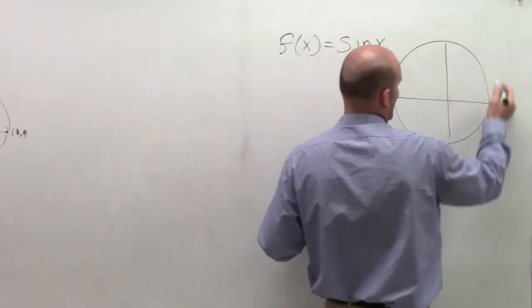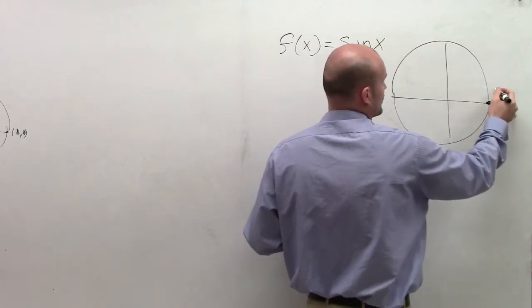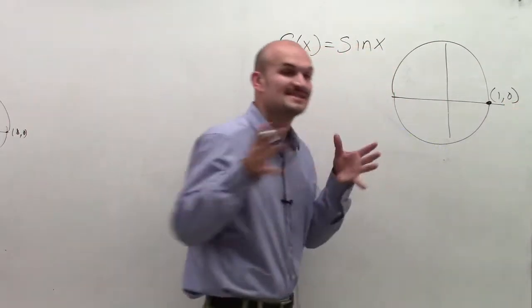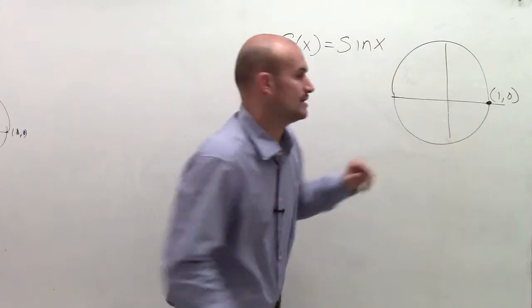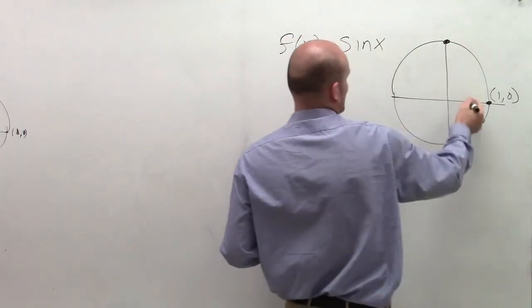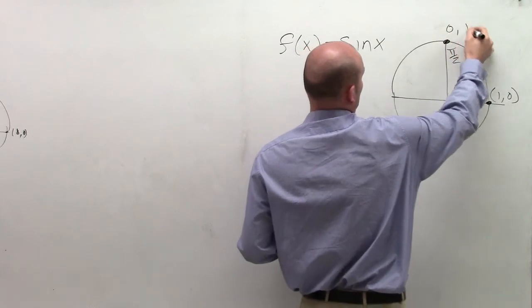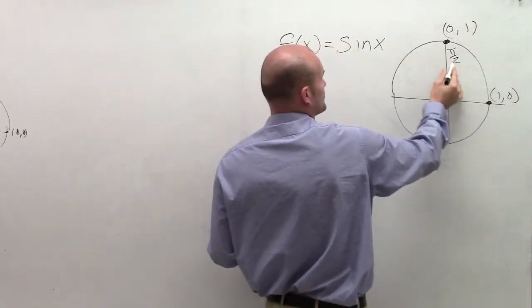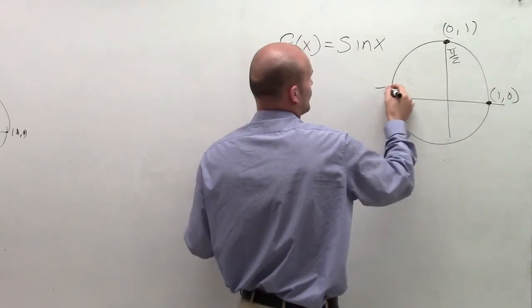So if I had an angle, my angle is 0. The coordinate point there is 1 comma 0. Remember, the sine function of that angle represented the y-coordinate. So for this angle, which is pi over 2, this point was 0 comma 1. So the sine of pi over 2 was equal to the y-coordinate, which was 1.